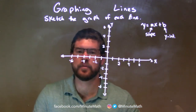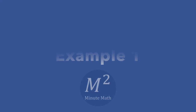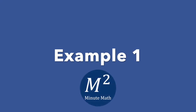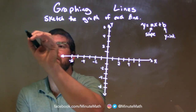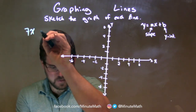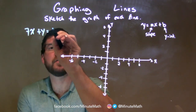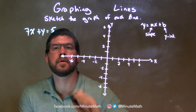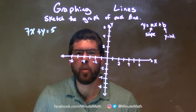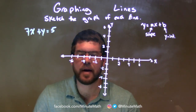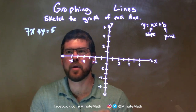We're going to sketch a graph of each line. I've been given this line: 7x plus y equals 5. When I see it in standard form, the way I like to tackle this is I like to get it into slope-intercept form.